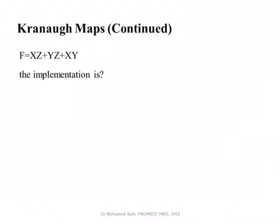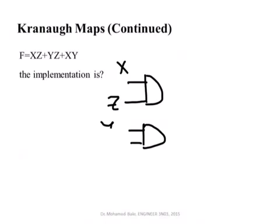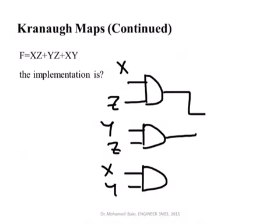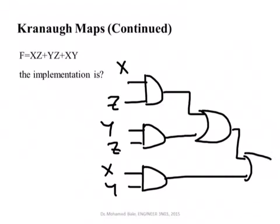To implement f equals xz plus yz plus xy as a sum of products: one AND gate gives xz, another gives yz, and a third gives xy. Then these three outputs are passed to OR gates — using two levels of two-input OR gates. This implements the logic function as sum of products using only two-input gates, shown as AND followed by OR gates.